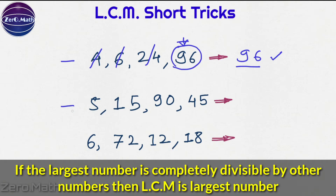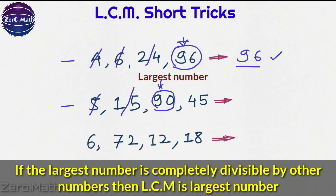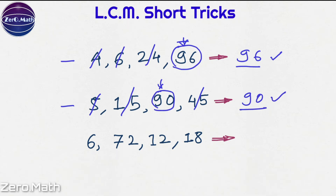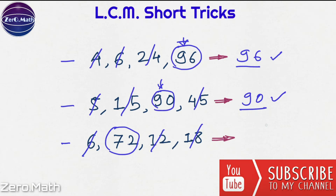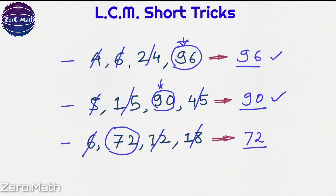Let us figure out the next problem. Here the largest number is 90. Let me check: 90 is completely divisible by 5, by 15, and by 45 — so I cancel them out. Obviously, my answer is going to be 90. Without even a second thought, I can write down my answer. Next example: the largest number is 72, and 72 is completely divisible by 6, 12, and 18. So I note down my answer as 72 directly. Very easy, isn't it?